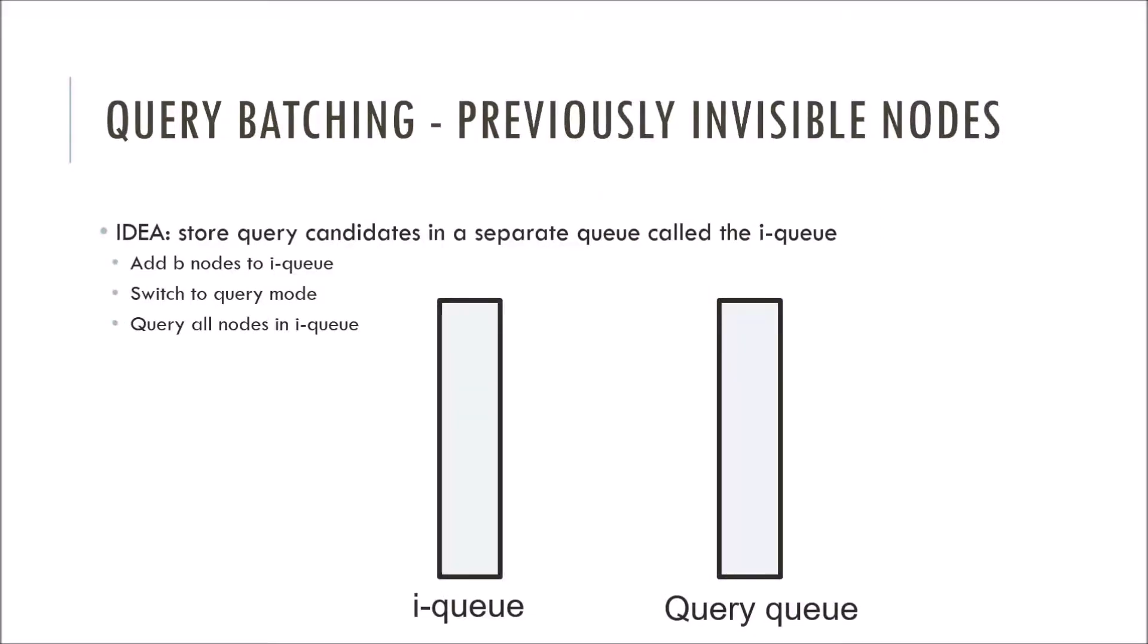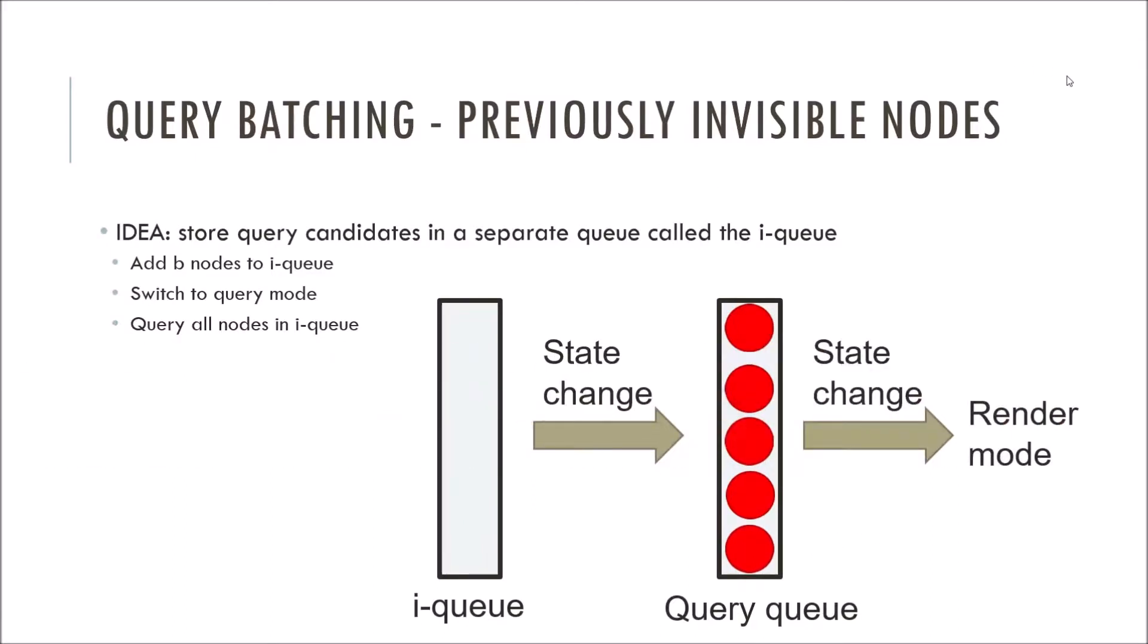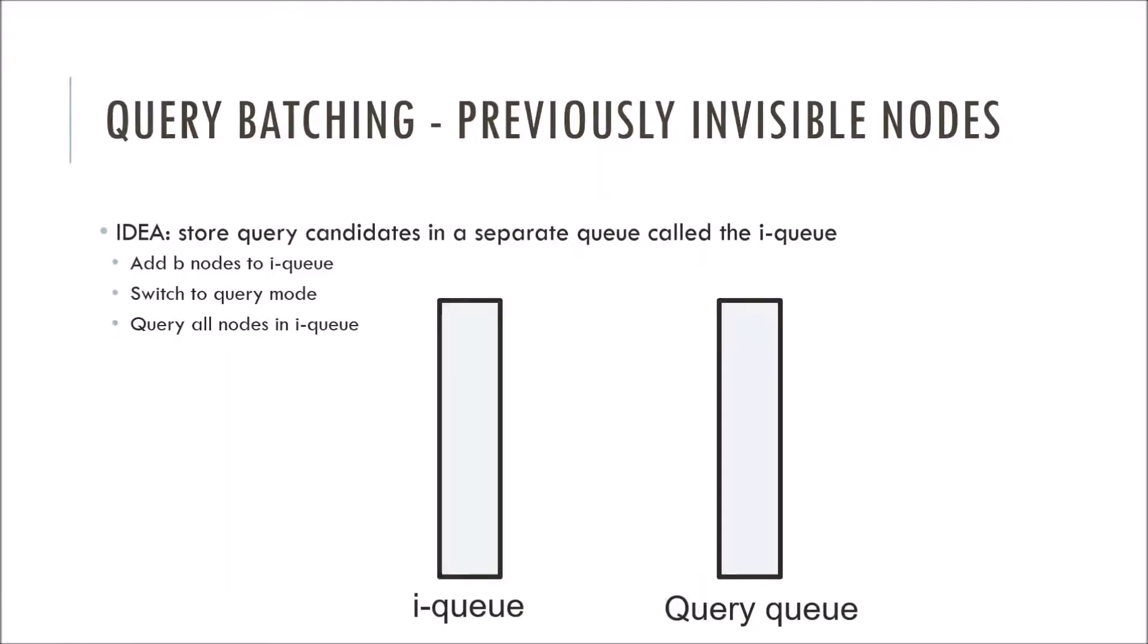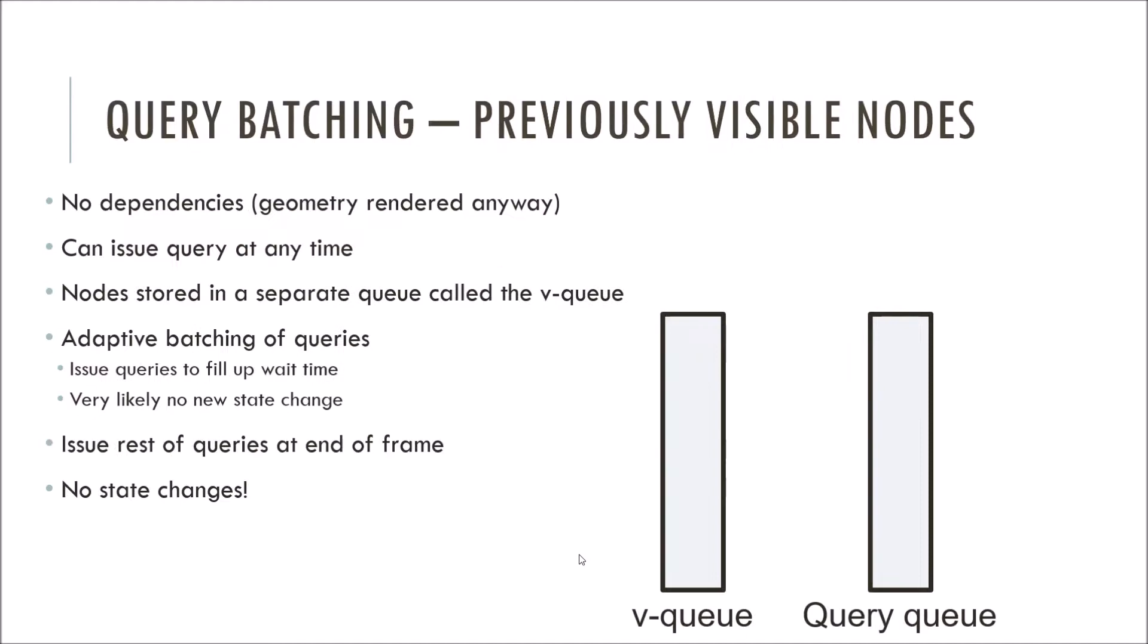So CHC++ tries to reduce the number of state changes to an acceptable amount. What CHC++ introduces is this idea that we have two separate queues, one for previously visible nodes called the VQ, which I'll get into in the next slide, and the IQ for previously invisible nodes. So the idea is very simple. We store candidate nodes in the IQ until the number of nodes in the queue reaches a user-defined size. Once it's full, we change the state for querying, and then issue an occlusion query for each node in the IQ. Once all the previously invisible nodes have been queried, we change the state for rendering. A big advantage of this is that we only have two state changes, which is a lot less than what we had before with the old CHC method.